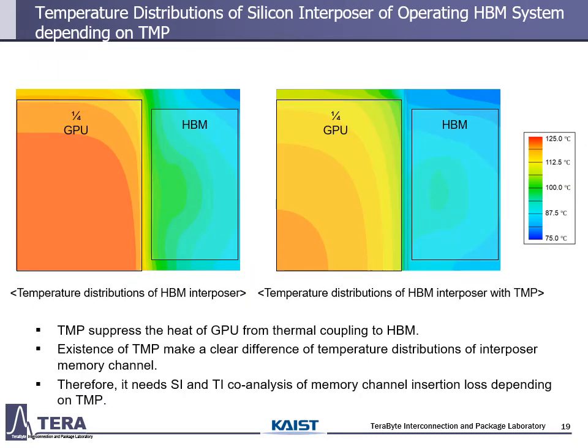This is the final slide of the TI analysis. This figure is the top view of the silicon interposer. It shows the TMP effect clearly. As you can see, the temperature is clearly divided between GPU and HBM regions due to TMP. By this effect, the temperature distribution of the silicon interposer memory channel with and without TMP has a clear difference. The average temperature of the channel is decreased by 11 degrees Celsius. Therefore, this temperature variation can change the insertion loss of the memory channel depending on TMP.